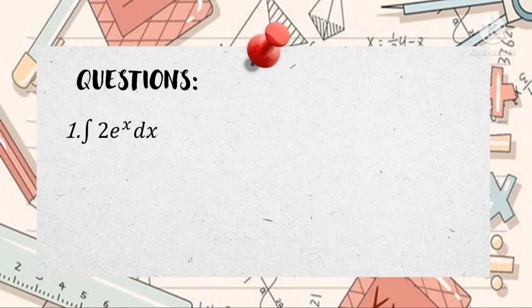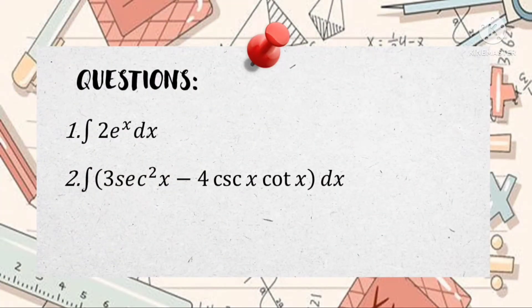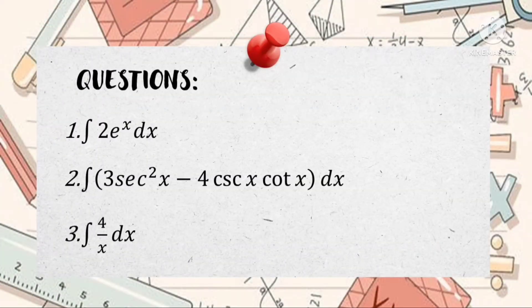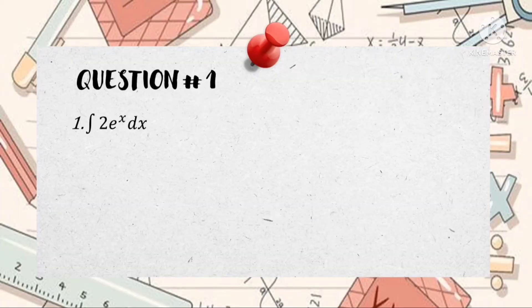Now let's move to the questions. Number one: the integral of 2e raised to x dx. Number two: the integral of quantity 3 secant raised to 2x minus 4 cosecant x cotangent x dx. Lastly, number three: the integral of 4 over x dx. Now let's answer number one: the integral of 2e raised to x dx.